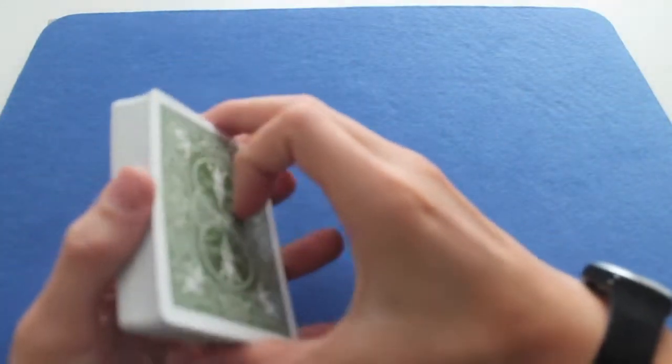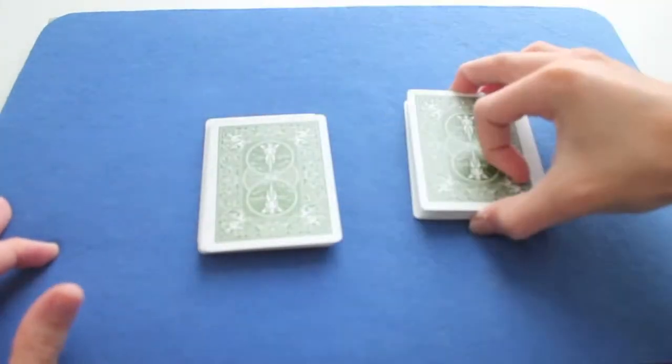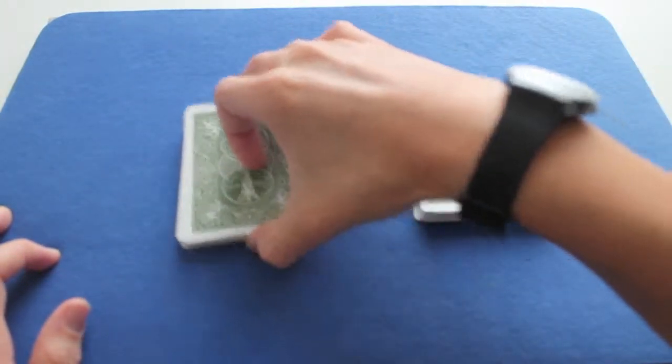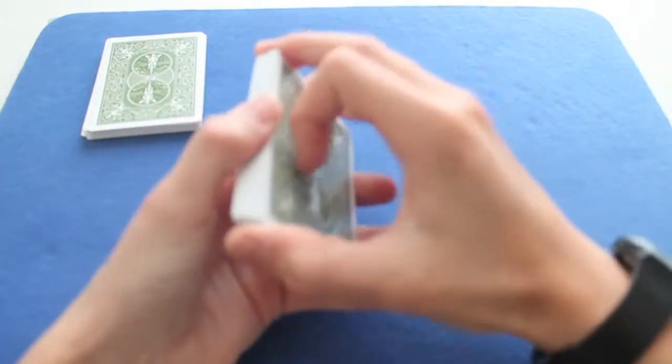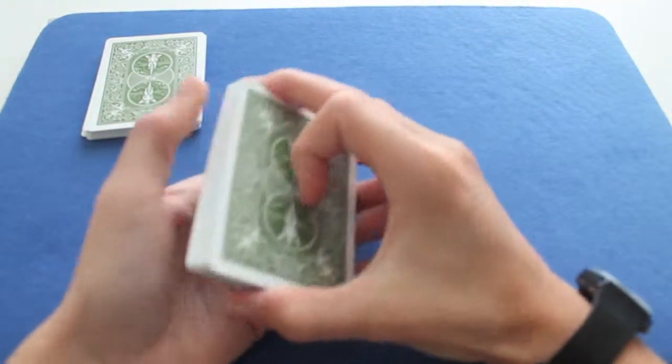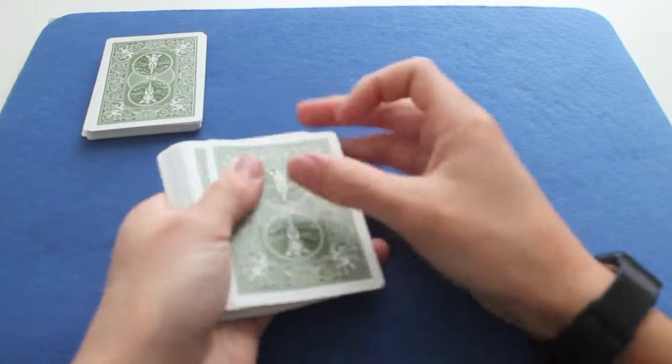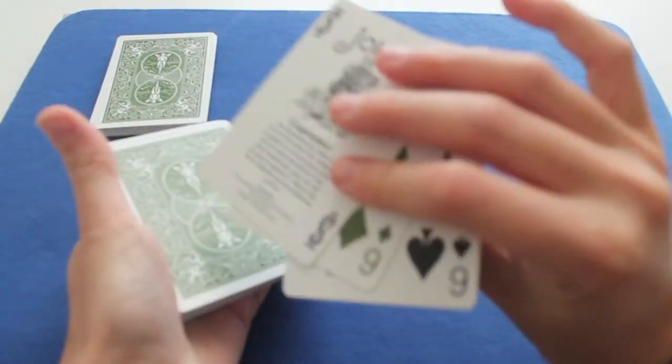So now you ask the spectators to cut the deck in half. Like this. And you give them the bottom pile. So right now, they feel like they're controlling the pile because they've chosen where they cut and everything. And they have one. But actually, you're controlling everything. Because you still have the top pile with their card in third position.